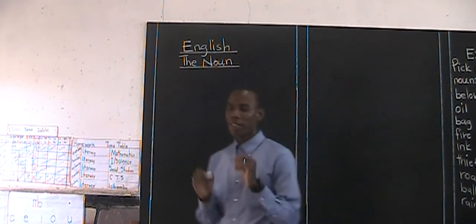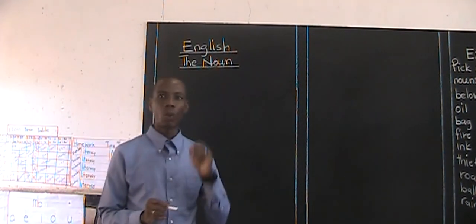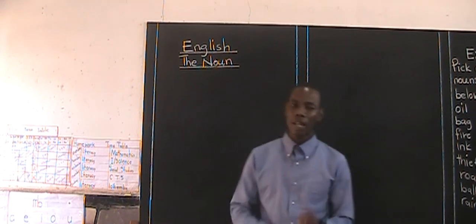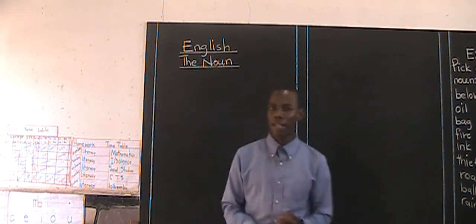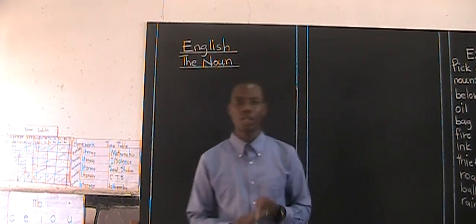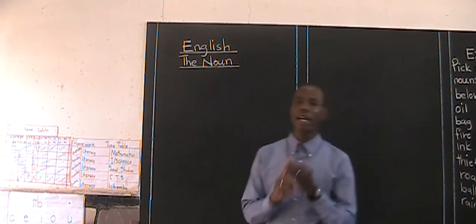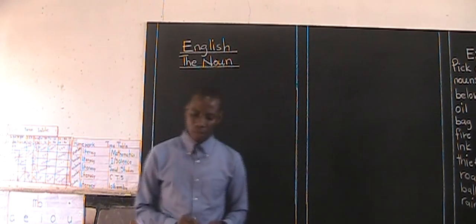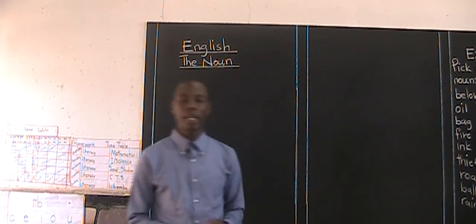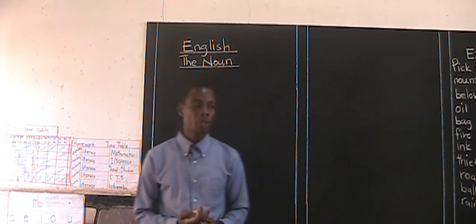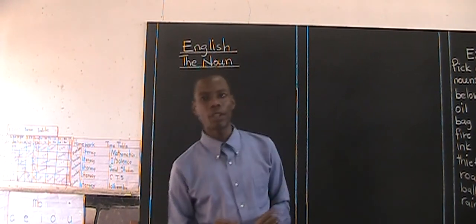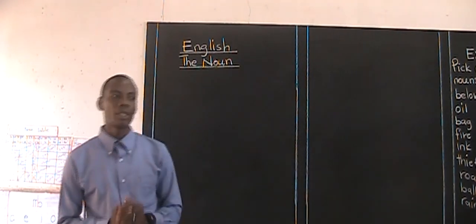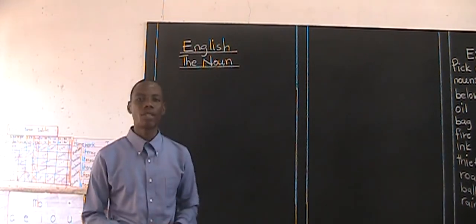We outlined different examples of collective nouns. For example, a pride of lions, a show of fish, an army of soldiers, a gun of thieves, a flock of sheep, and a swarm of bees. We mentioned that there are a lot of collective nouns that we cannot exhaust in a day.